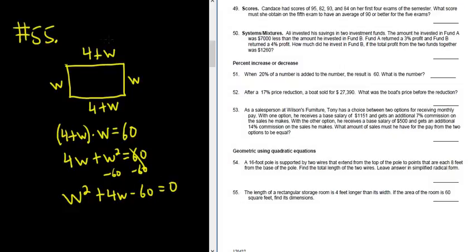So again, recap. We knew it was rectangular, so we drew the rectangle. We know it's 4 feet longer than it is wide. That's how we got the length of 4 plus W. The width is W. The area is length times width, so 4 plus W times W. We distributed. Now we're setting it equal to 0 and we'll factor.